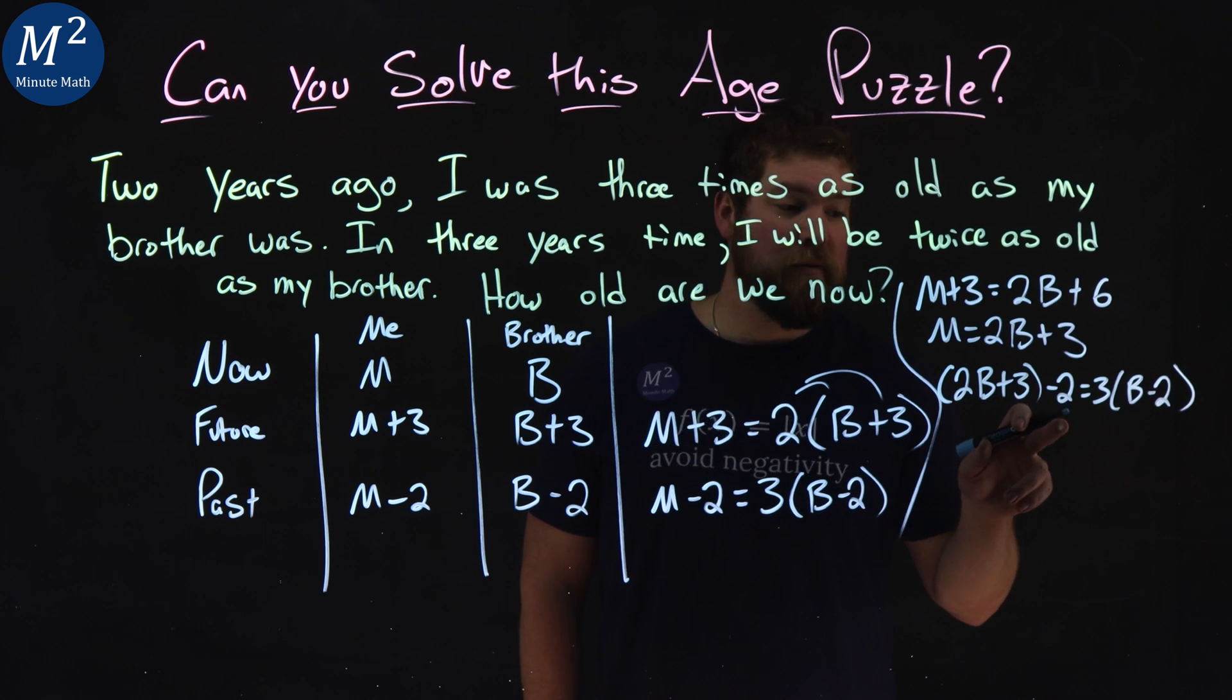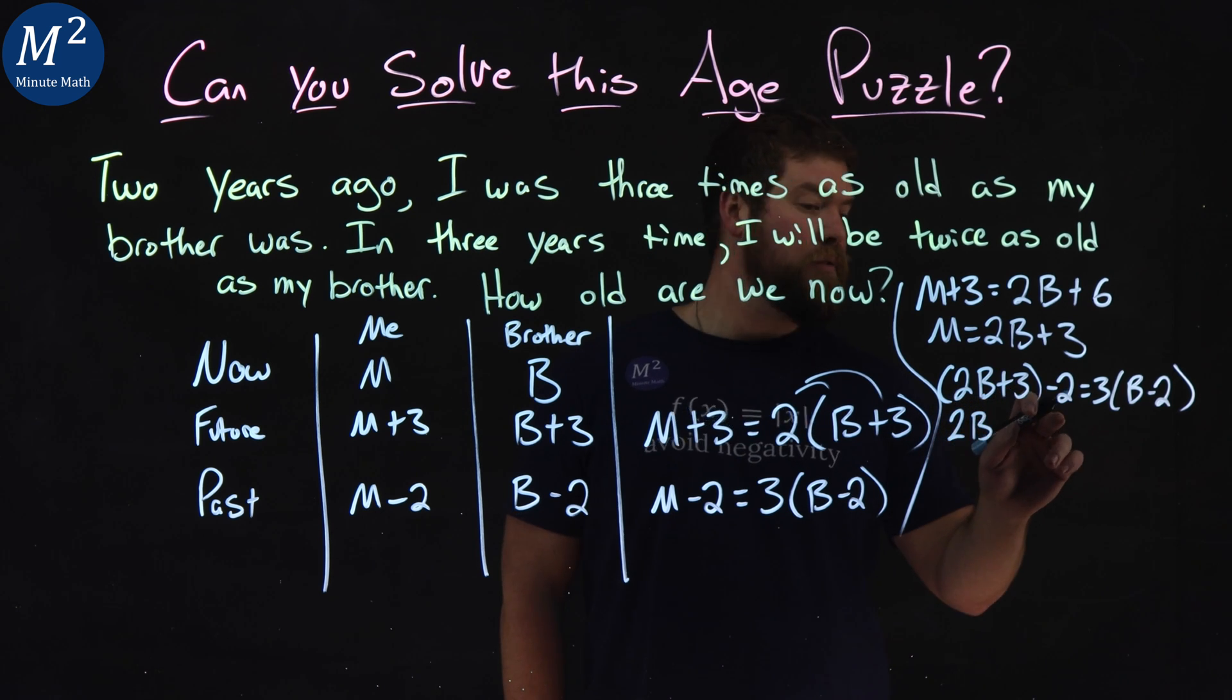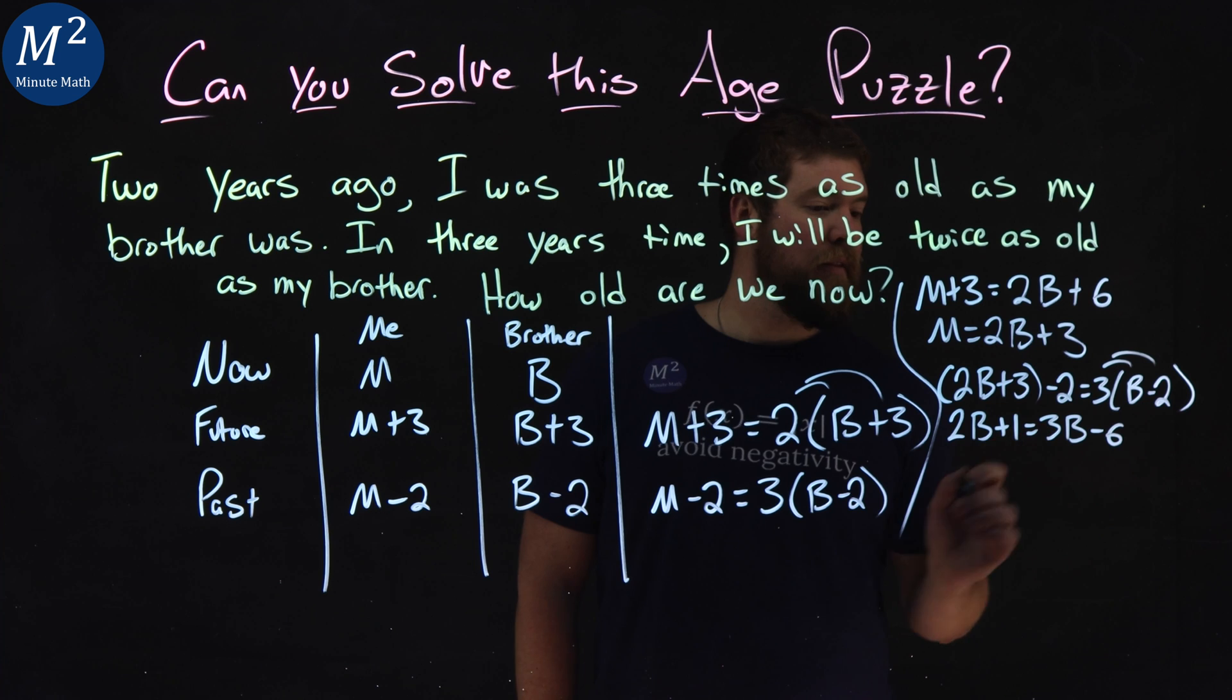From there, I want to simplify trying to get B by itself. So we have two B, three minus two is one, so plus one equals, distribute the three, three B minus six.